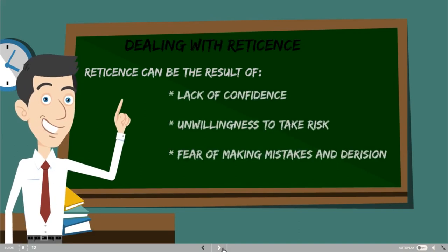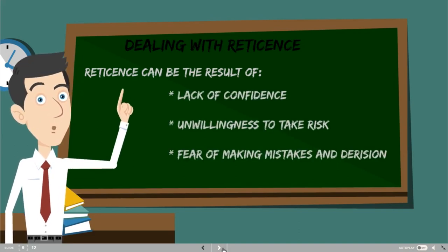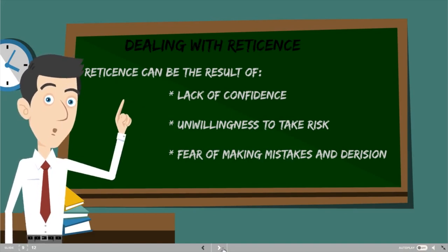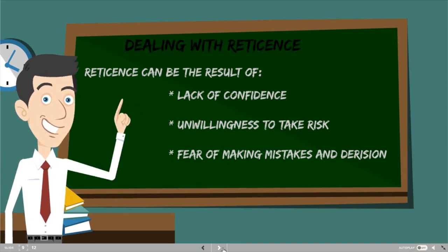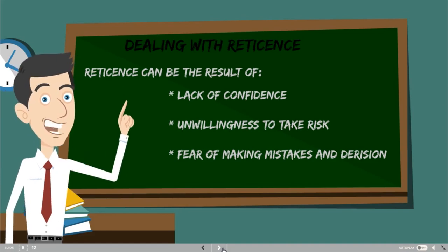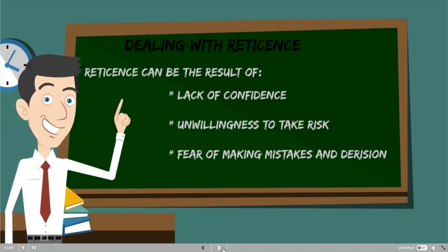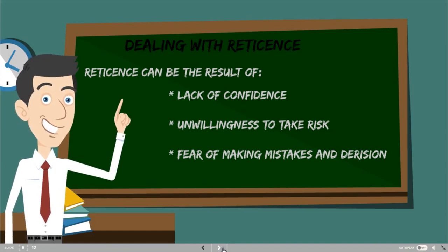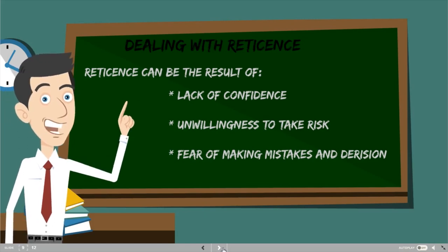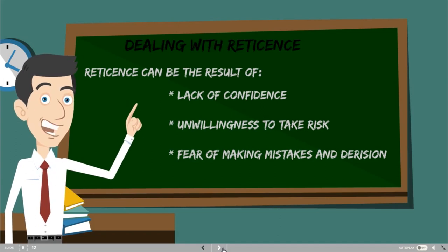Dealing with reticence: reticence is a very serious problem teachers face in their classrooms. By reticence, we mean that tendency to be silent and not eager to participate in the classroom. Many students have this problem. To find a solution, we should first investigate the reasons behind it. Reticence can be the result of lack of confidence — some students don't trust that they have the right answers, so they stay silent.